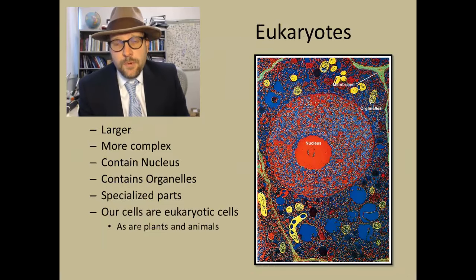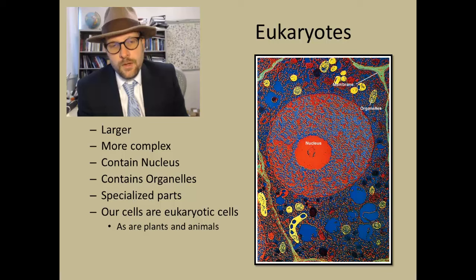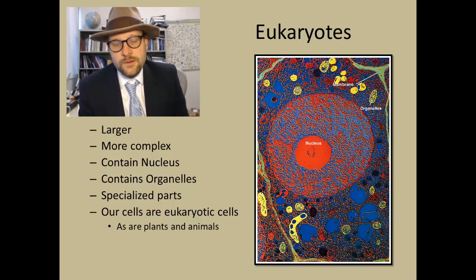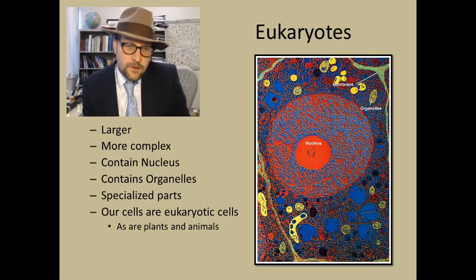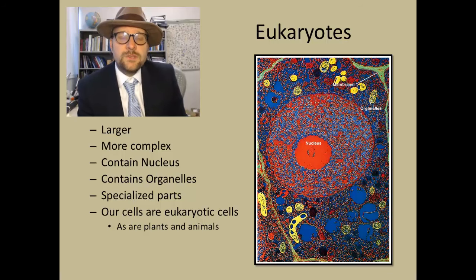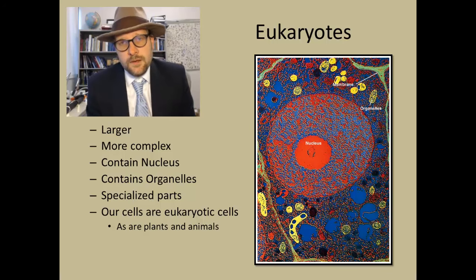The other major type of organisms are eukaryotic organisms, which include all multicellular organisms including you and I. Eukaryotic cells are larger and much more complex. They contain a nucleus, contain organelles — many of which have their own DNA — and have very specialized parts. Our cells are eukaryotic cells, as are those of plants, animals, and many microorganisms. They include mitochondria and different types of complexes — a very complicated cell.